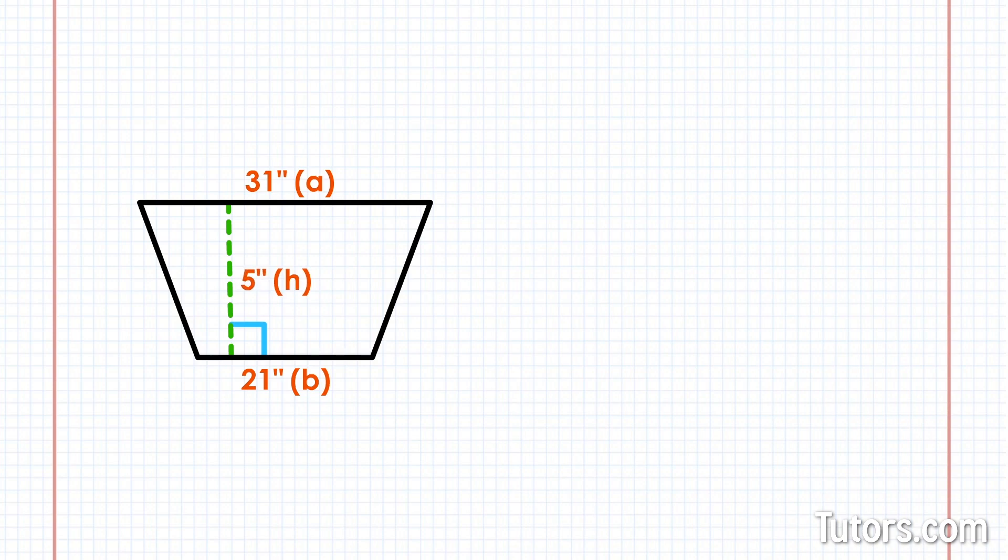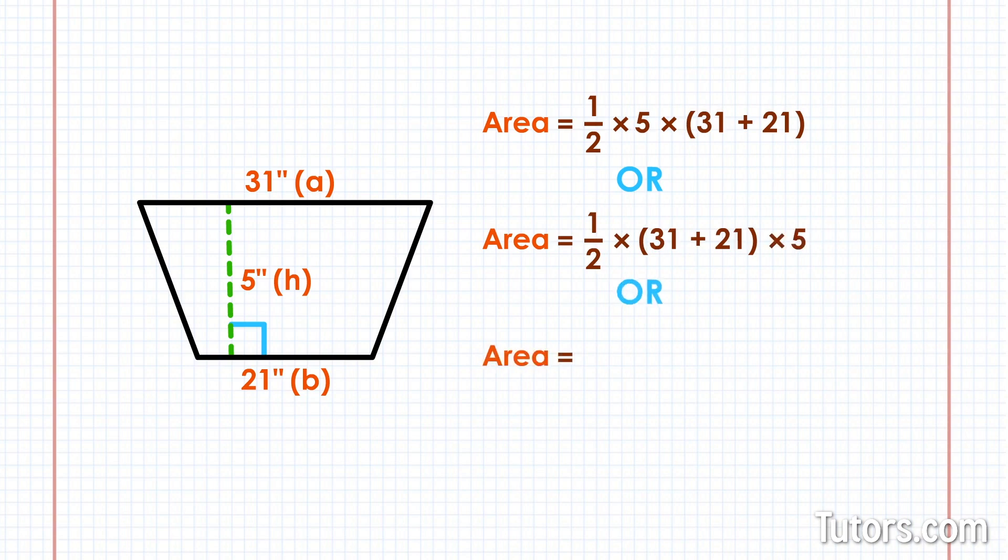So we can calculate this three different ways. Area equals one-half times five times the sum of 31 plus 21. Or, area equals one-half times the sum of 31 plus 21 times five. However you use the formula, you will always get the same answer, 130 square inches.